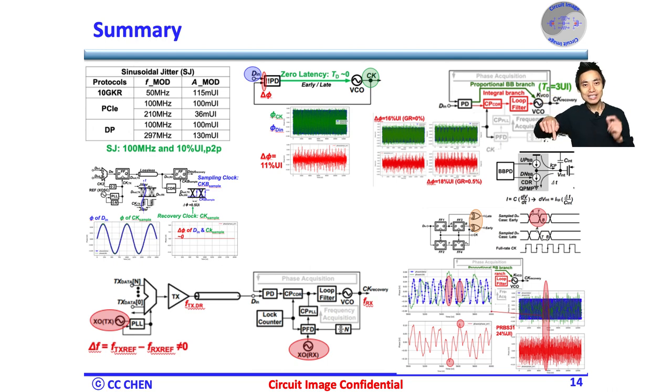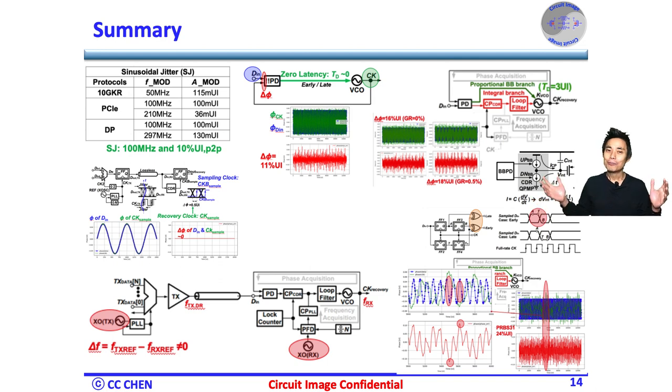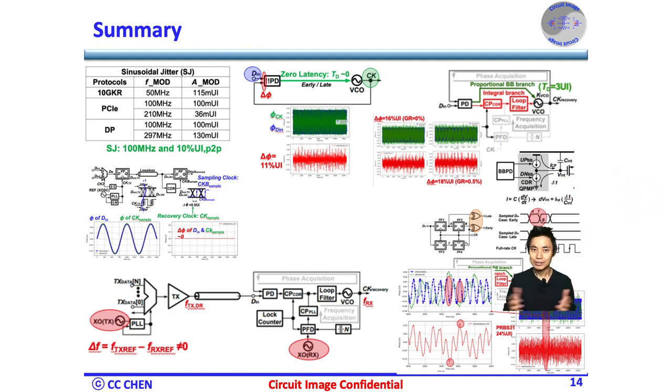we need to reduce its gain by increasing the loop filter capacity or reducing the charge pump current. However, both integral gain reduction images are also trade-off with the chip area or the current mismatch for no data transition in a tri-state,